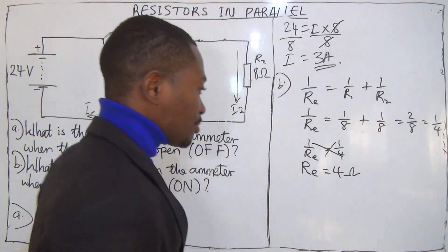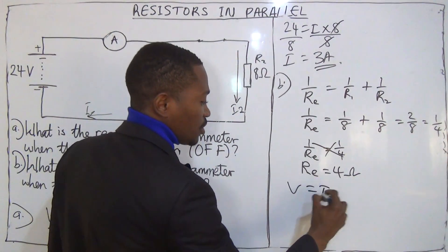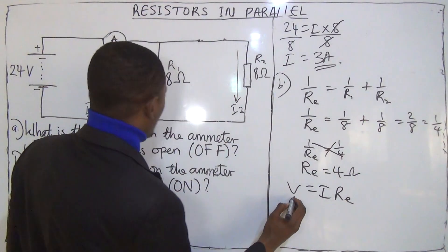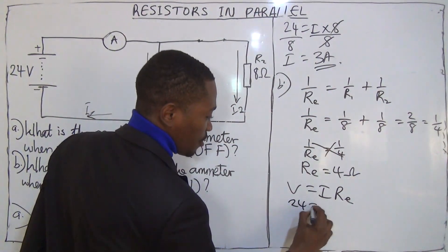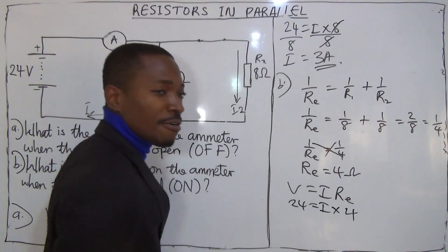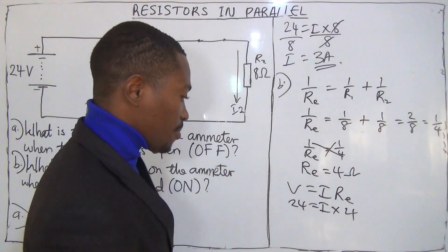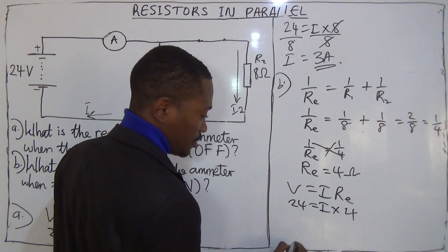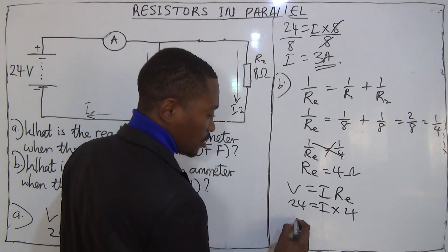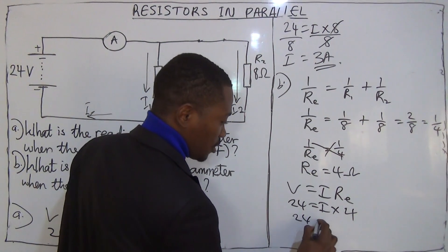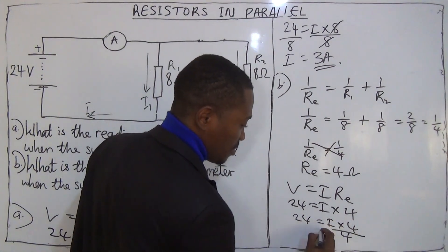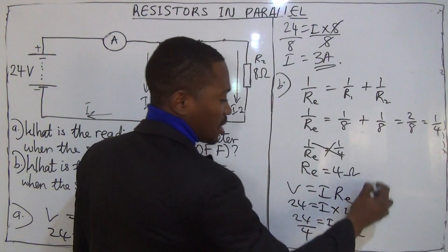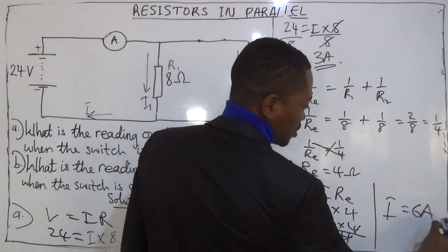What is the current I? We use V equals I times R-effective. The voltage in the circuit is 24 volts, so we have 24 equals I multiplied by 4. Dividing both sides by 4, we get I equals 24 divided by 4, which gives us 6 amperes.